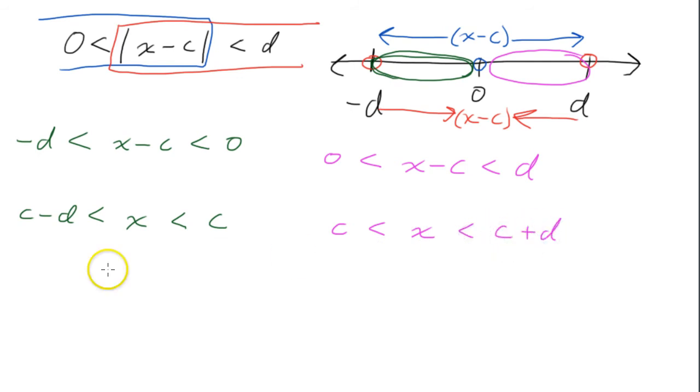So we get, then, two intervals and those intervals can be written. We could write that in interval notation here with c minus d. C minus d up to c and c up to c plus d.